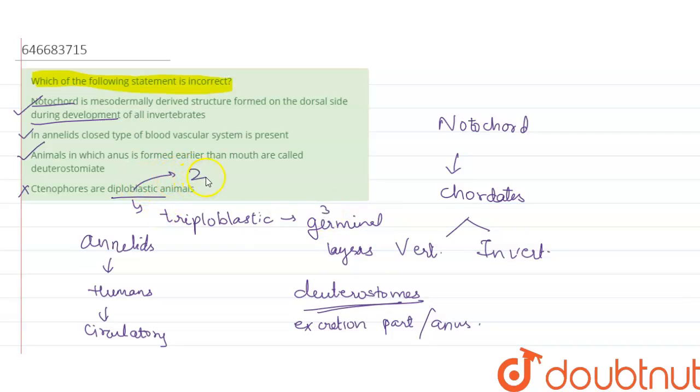And diploblastic means two. So we can say option D is our answer. I hope this has clarified your doubt. Thank you.